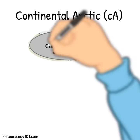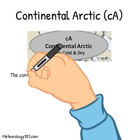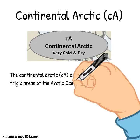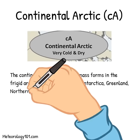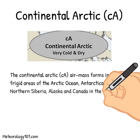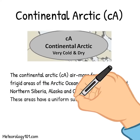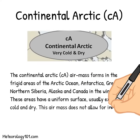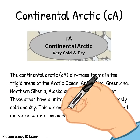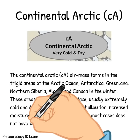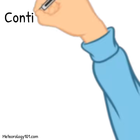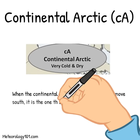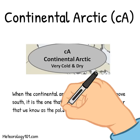The continental Arctic air mass forms in the frigid areas of the Arctic Ocean, Antarctica, Greenland, northern Siberia, Alaska, and Canada in the winter. These areas have a uniform surface, usually extremely cold and dry. This air mass does not allow for increased moisture content because the area in most cases does not have unfrozen water. When the continental Arctic air mass moves south, it is the one that starts the frigid dry weather that we know as the polar vortex.